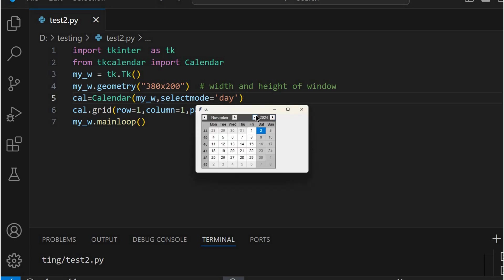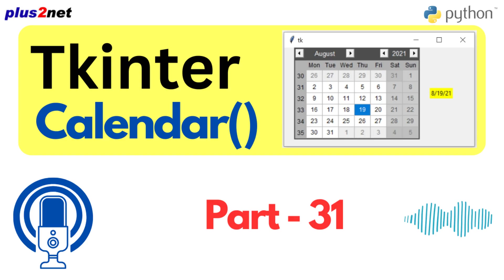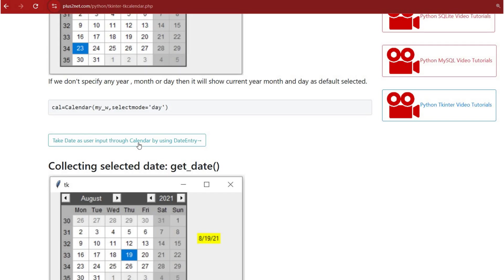We use grid to position the calendar, and then finally myw.mainloop gets that window up and running. That's the standard tKinter stuff at the end, but now we've got this calendar.